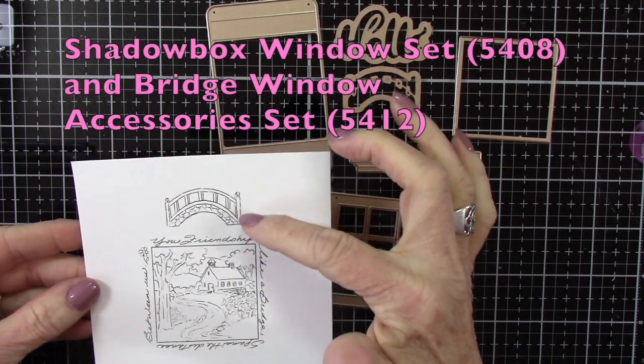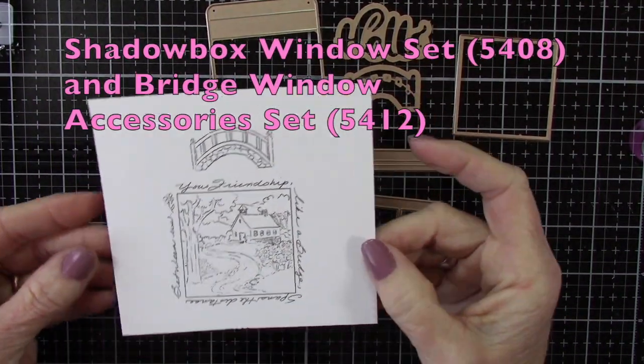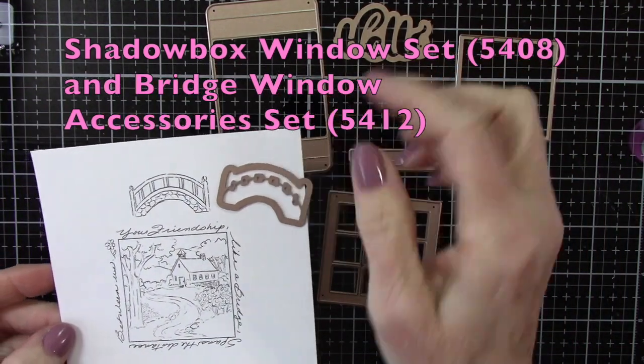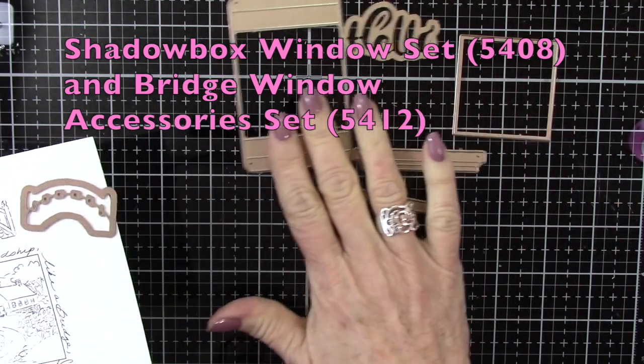These are the dies and stamps we're going to be needing. This first set is the bridge window accessory set, number 5-4-1-2, and it does come with a die.